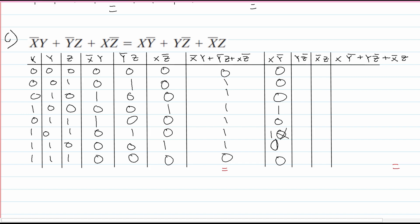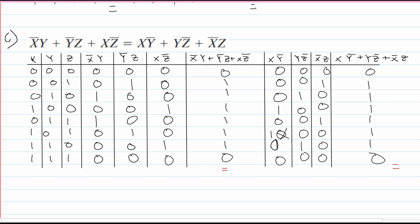For y·not-z, we are going to have: 0, 0, 1, 0, 0, 0, 1, 0. And for the last column, not-x·z, we have: 0, 1, 0, 0, 1, and then the last three are 0s. Now let's add these all together to get: 0, 1, 1, 1, 1, 1, 1, and lastly a 0.